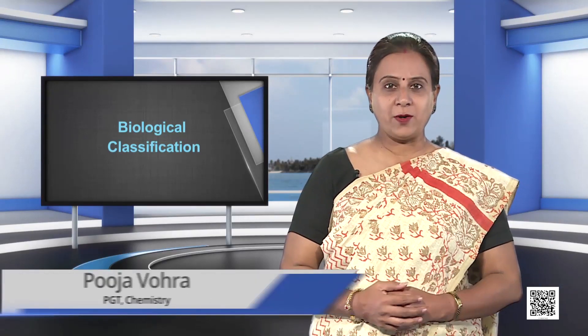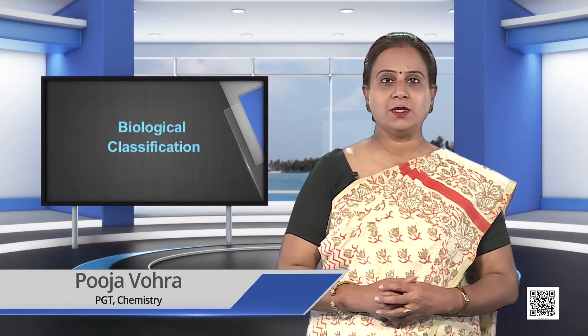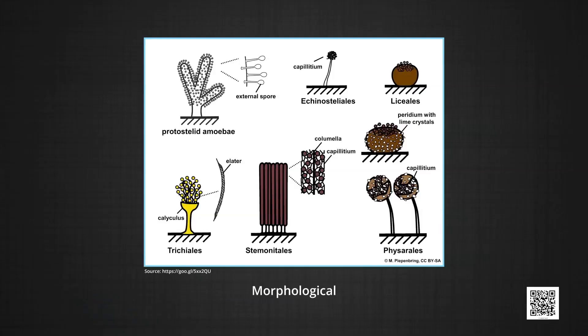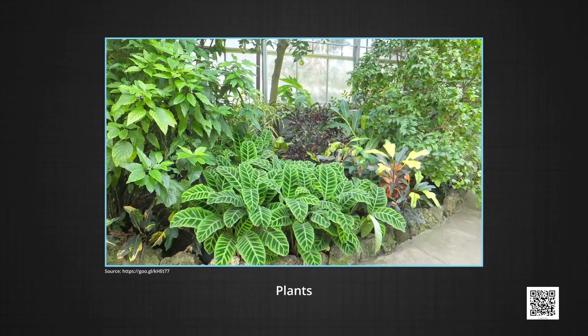Biological classification is the classification of organisms on the basis of their morphological, physiological and some other relationships. Classification is required for the systematic study of organisms on the basis of their similarities and dissimilarities. The first system of classification was given by Aristotle, who divided the living world into plants and animals.